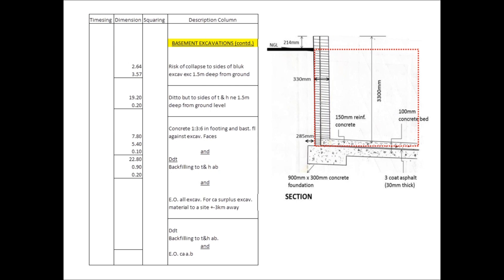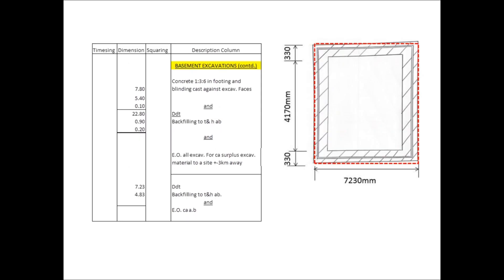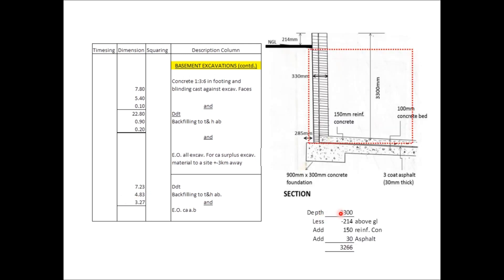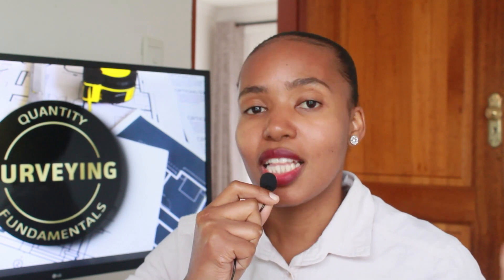Next we deduct the backfilling to trenches and holes as before and extra over cutting away as before. The area to be deducted is 7.23 by 4.83, and to get the depth we take 3.3 less 214 millimeters, add 150 millimeters reinforced concrete, add 30 millimeters asphalt, giving 3266 millimeters — entered as 3.27 in the dimension column. If you've made it this far, thank you so much for watching the video. I'll catch you in the next one.